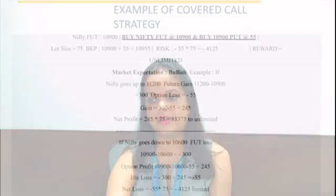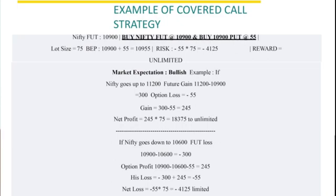In this example, we are buying a Nifty future at 10,900 and also buying the put option at the CMP of 10,900, let's say at 55 rupees. The lot size for Nifty is 75, and the breakeven would be 10,900 plus 55, which is the option premium we are paying — so our breakeven comes at 10,955. The maximum risk we are taking is the premium paid: 55 into 75, which is 4,125 rupees. The reward is unlimited because we are bullish on the futures. The market expectation here is bullish.